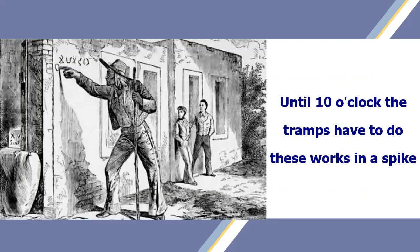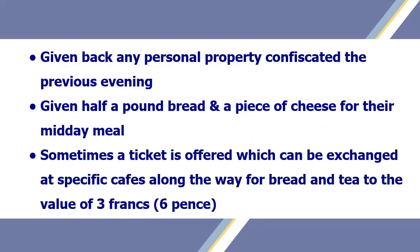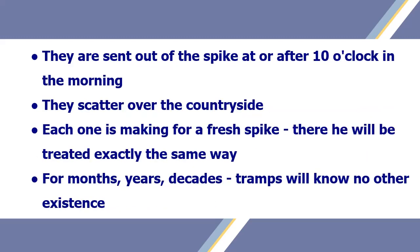At 10 o'clock, any personal property confiscated the previous evening is given back. They are given half a pound of bread and a piece of cheese for their midday meal. Sometimes a ticket is offered which can be exchanged at specific cafes along the way for bread and tea to the value of 3 francs. They are then sent out of the spike. They scatter over the countryside, each one making for a fresh spike where he will be treated in exactly the same way.